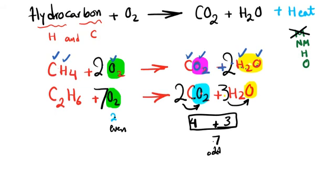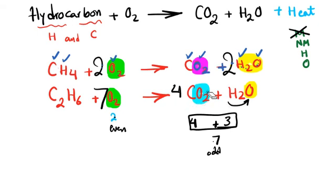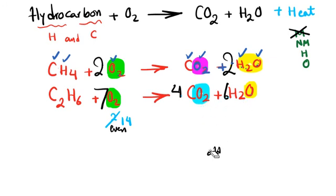When we have even and odd numbers, we switch: write seven for O2 and apply the existing coefficients. Two times two gives four for CO2, two times three gives six for H2O. To verify oxygen: seven times two equals fourteen on the left; four times two equals eight plus six equals fourteen on the right. Oxygen is balanced.